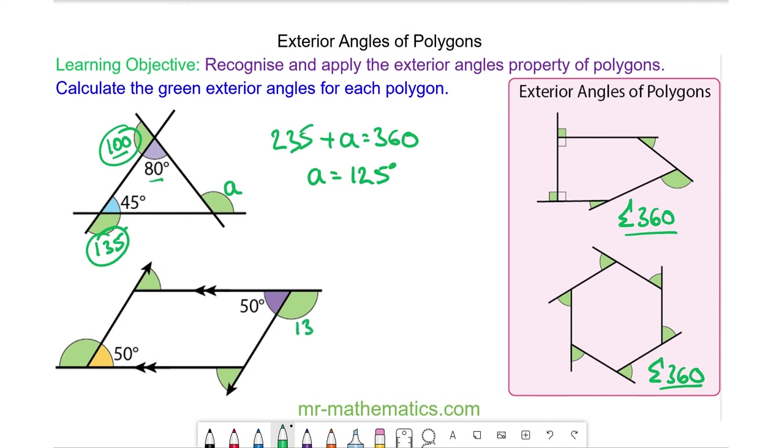So we know this angle will be 130 degrees because it lies along a straight line with 50. This will be the same and these two angles must be equal because it's a parallelogram.